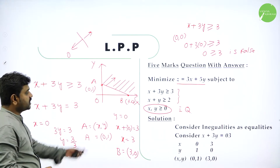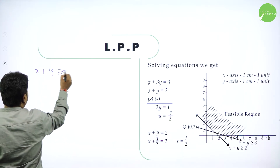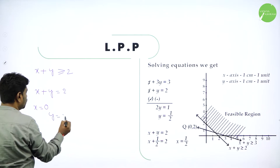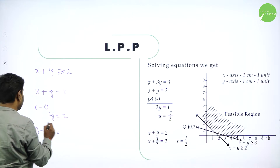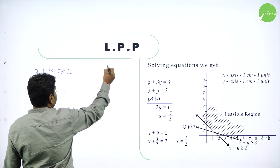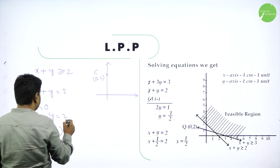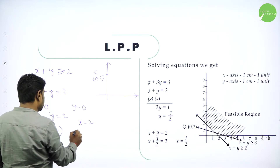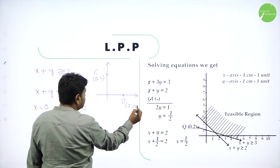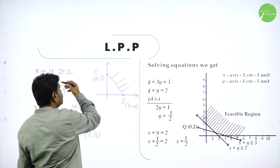Now, second condition: X plus Y greater than or equal to 2. I will take X plus Y equal to 2. Put X equal to 0, Y will become 2 — I name that point C: 0 comma 2, a point on the Y axis. Put Y equal to 0, X will become 2 — another point D: 2 comma 0. Always write X coordinate first, then Y coordinate. Draw a line between these two. Greater than means shade above. When you substitute the origin you get false, so shade above.